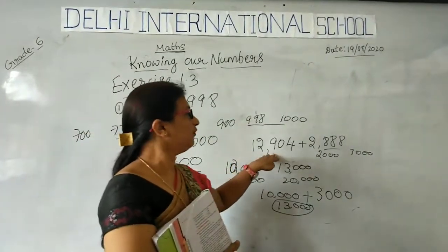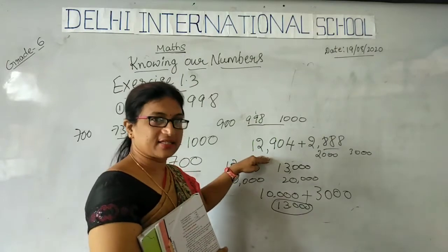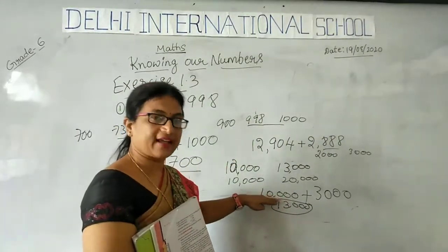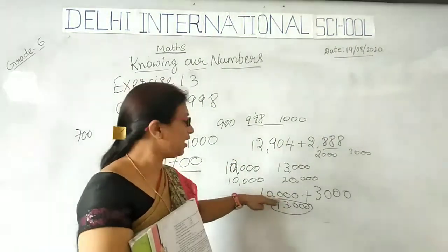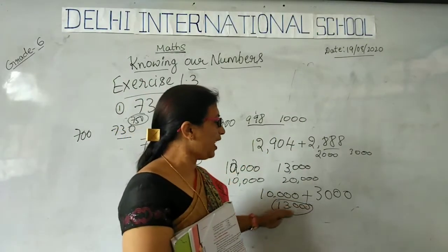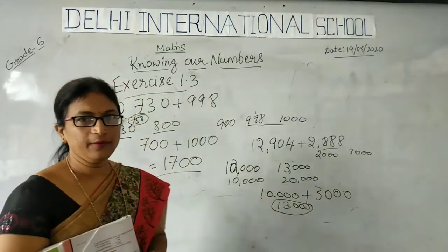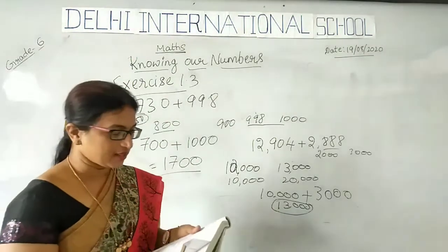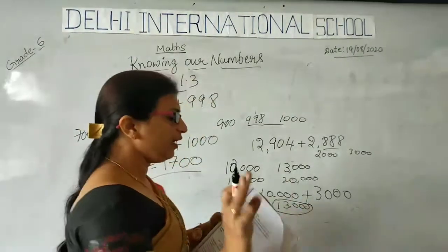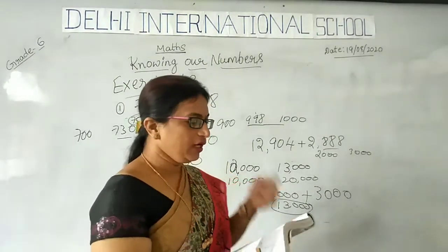We have to estimate the number to the nearest hundreds, thousands, lakhs, or 10,000 and then add to estimate the sum. In the same way, the remaining problems you will do at home.